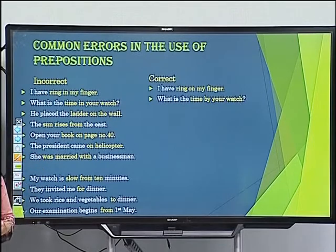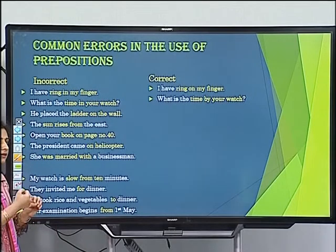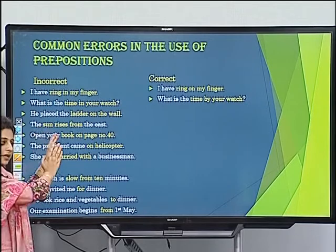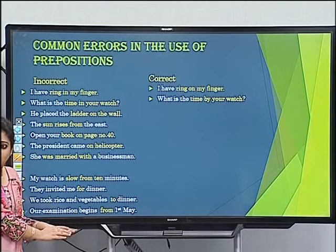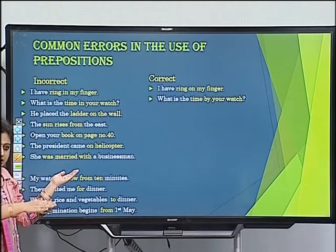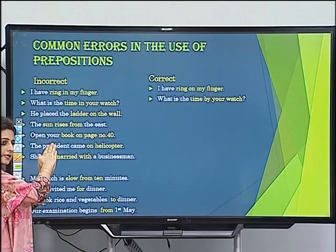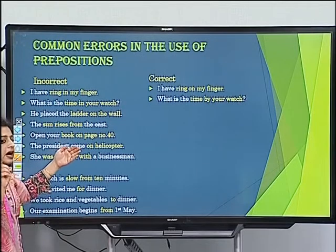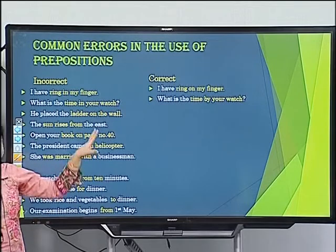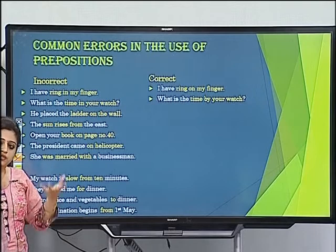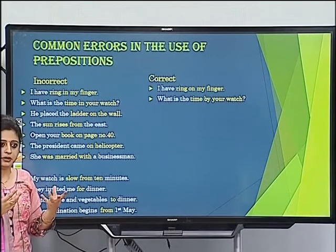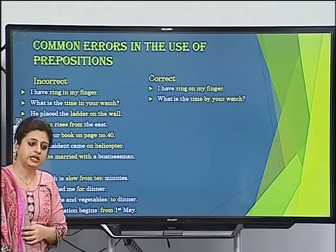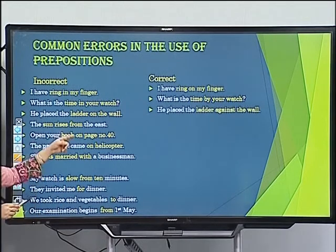Error: 'He placed the ladder on the wall.' This implies the ladder is flat on the wall. When you lean something against a surface using force in the contrary direction, use 'against.' Correct: 'He placed the ladder against the wall.' Similarly, 'she threw her doll against the wall' — showing force and aggression in the opposite direction.